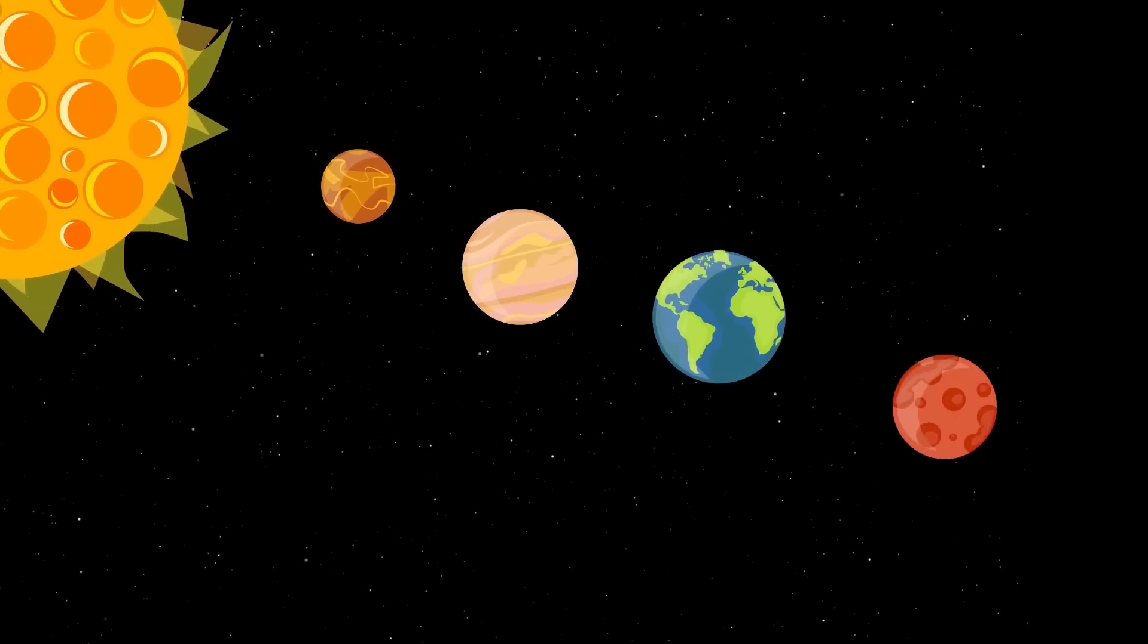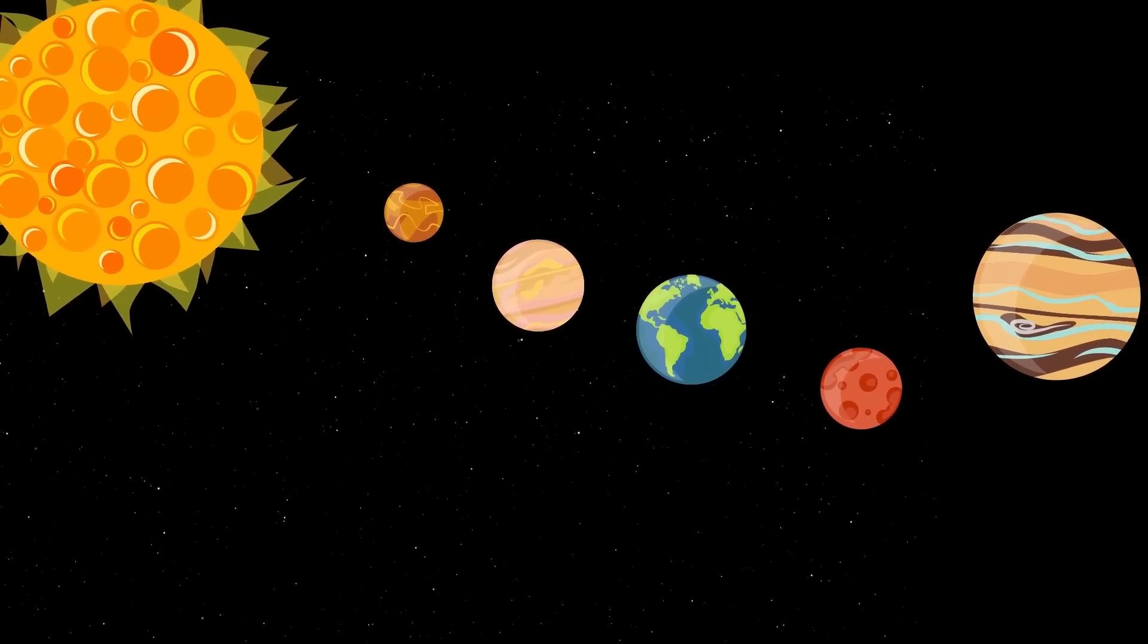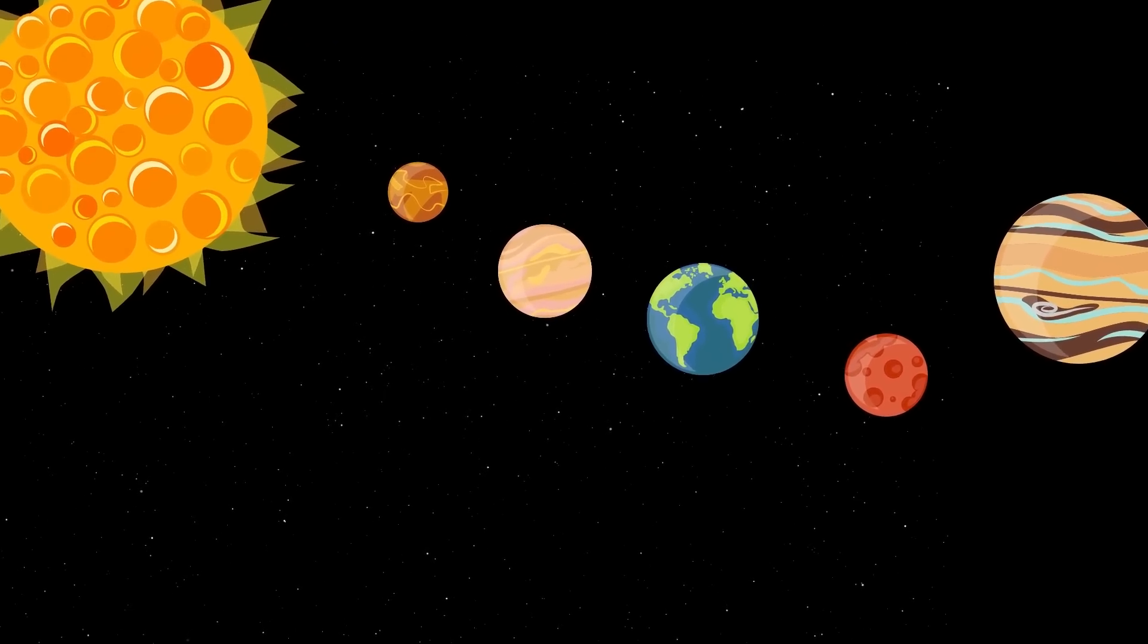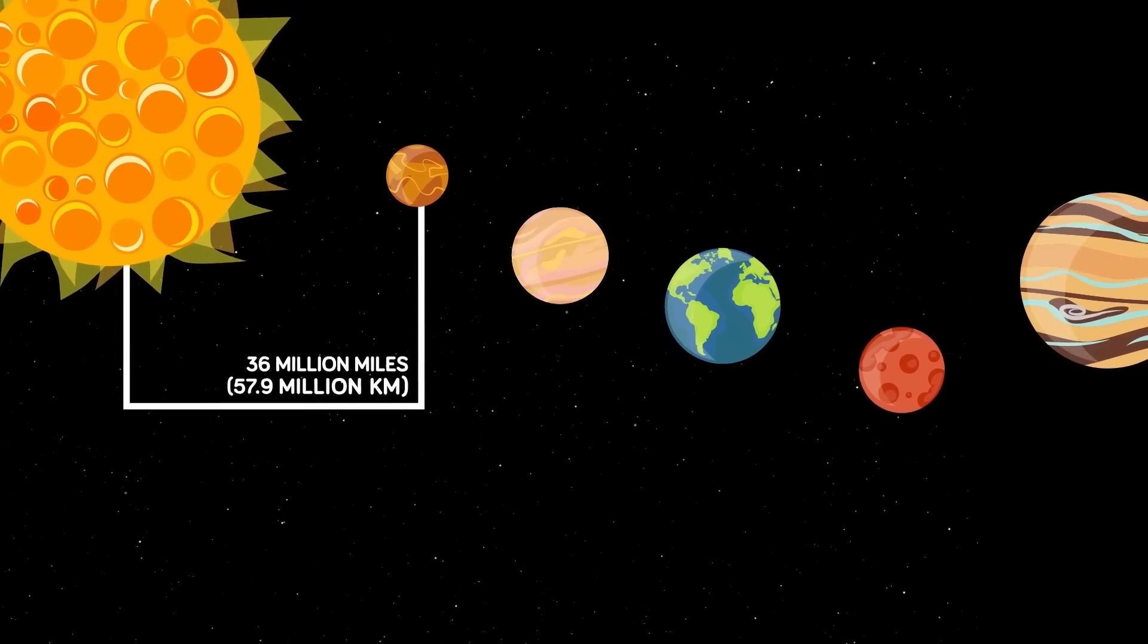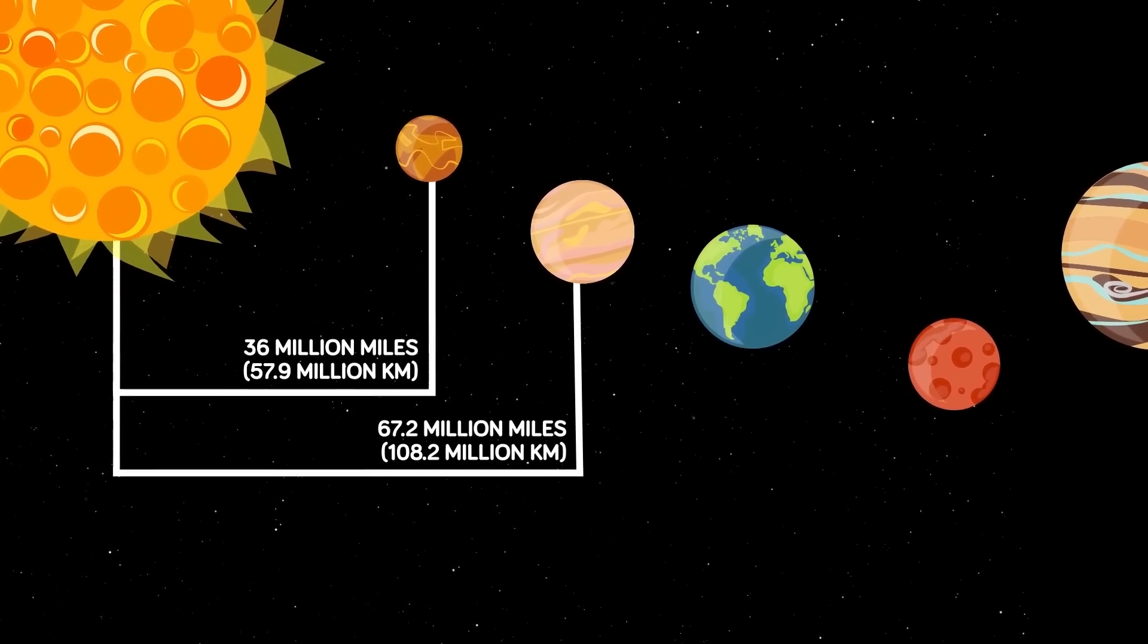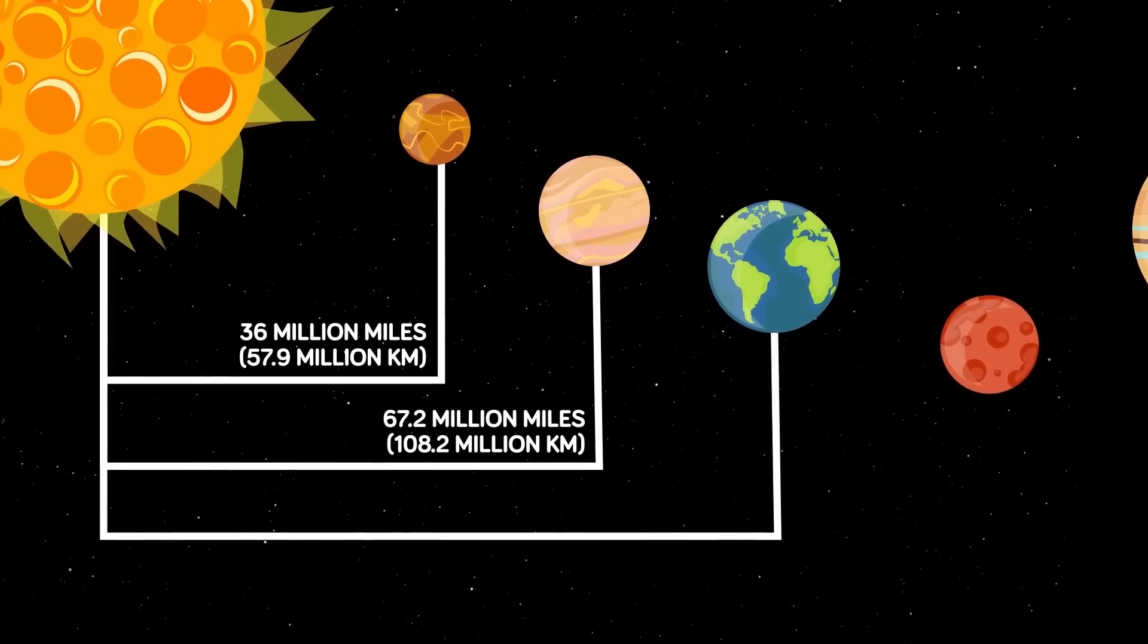Speaking of other planets, let's look at how far away they are from the sun, since if we know that we might better understand what Earth might look like if it was very far away. As you know, the planet closest to the sun is Mercury, at 36 million miles away. Next is Venus at 67.2 million miles, and we are of course the third rock from the sun. You already know that distance.